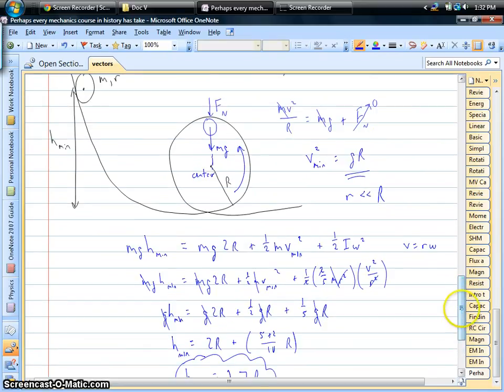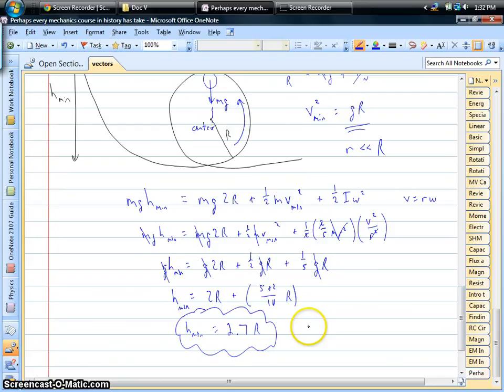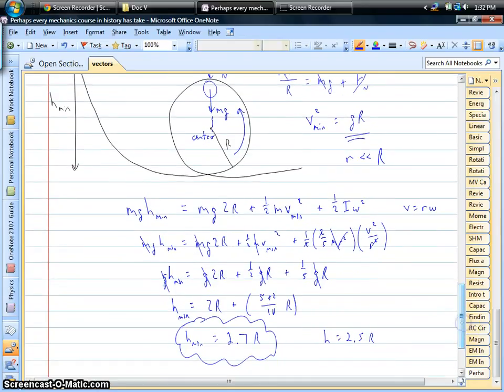Now, I have another video that does this for a block just sliding around with no friction or anything. And that minimum height turned out to be two-and-a-half times the radius. You might ask the question, well, why do we need more energy in this case for a ball than we do for a block that's only sliding?